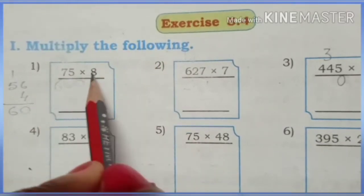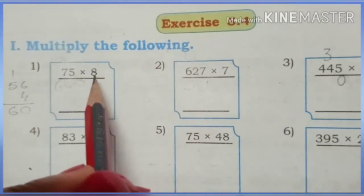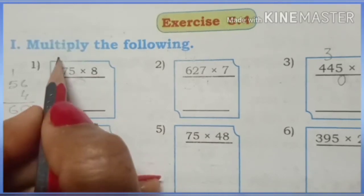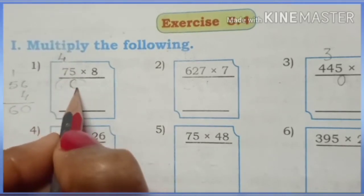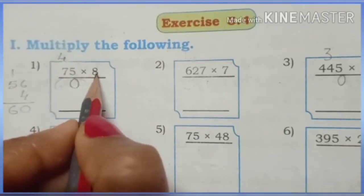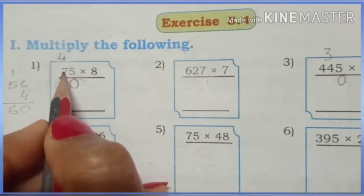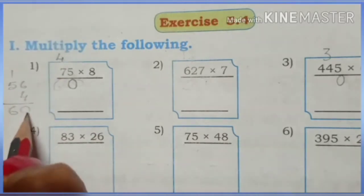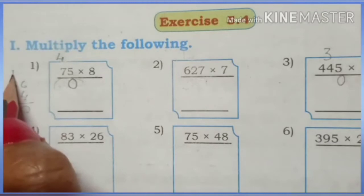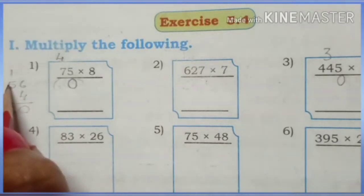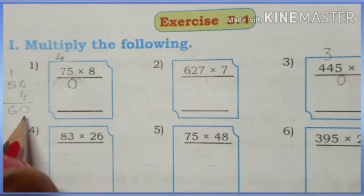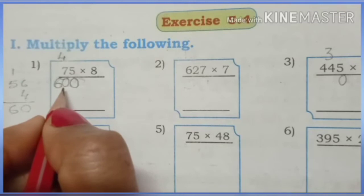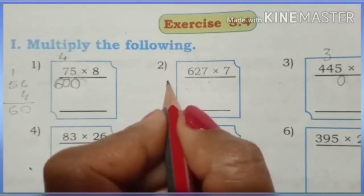First question: 75 multiplied by 8. 8 fives are 40 — write 0 in the units place and carry 4 to the tens place. 8 sevens are 56, plus 4 is 60 — write 0 in units place and carry 6. So the answer is 600.